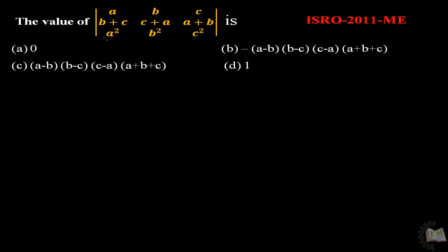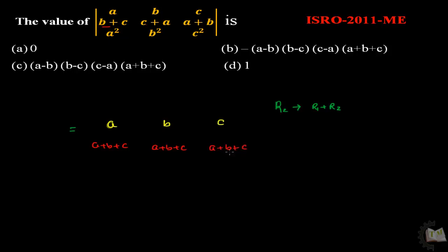The matrix has first row a, b, c; second row b+c, c+a, a+b; and third row a², b², c². First, I will add row 1 and row 2 — that is, the new row 2 will be row 1 plus row 2. We will change only the second row, not the first and third rows.